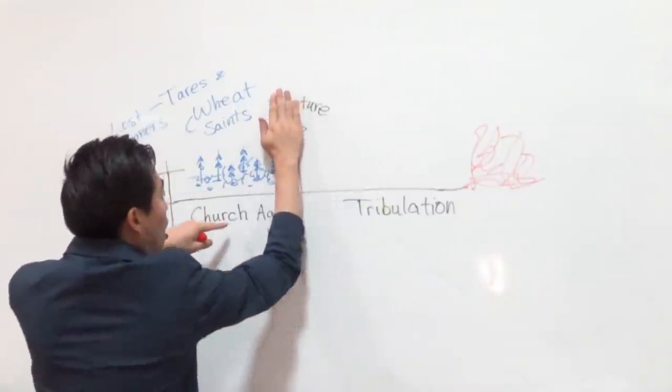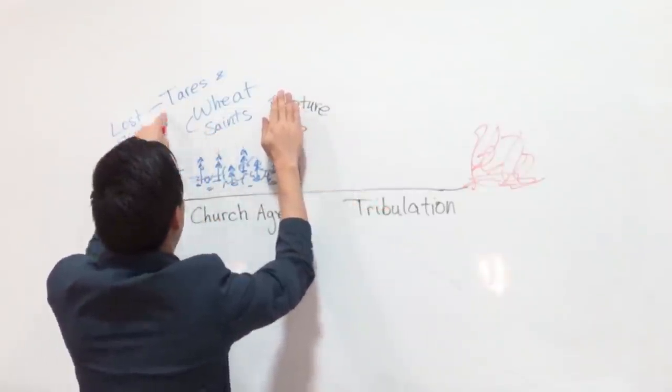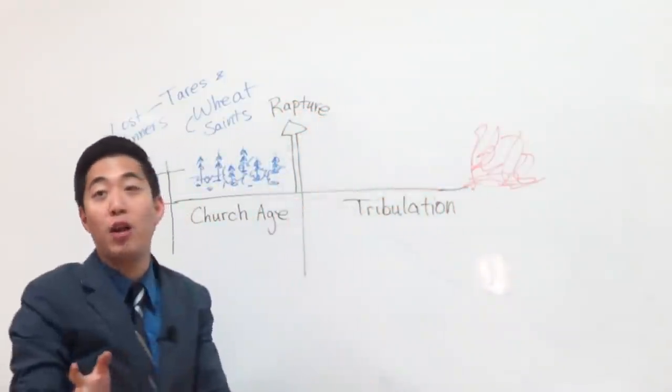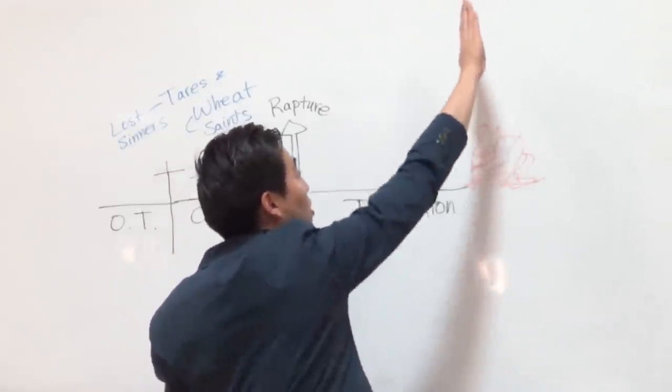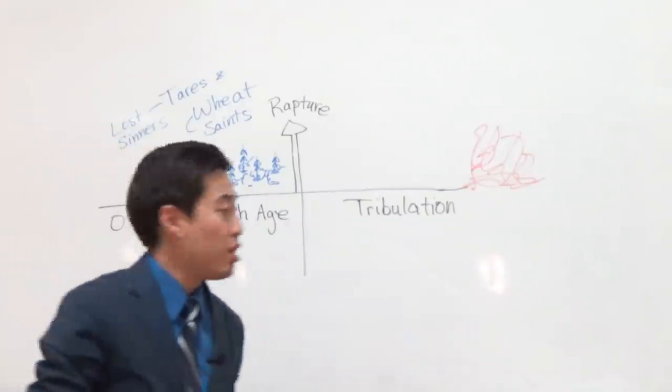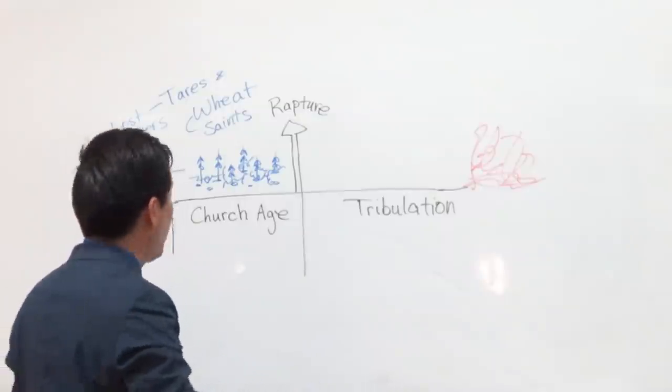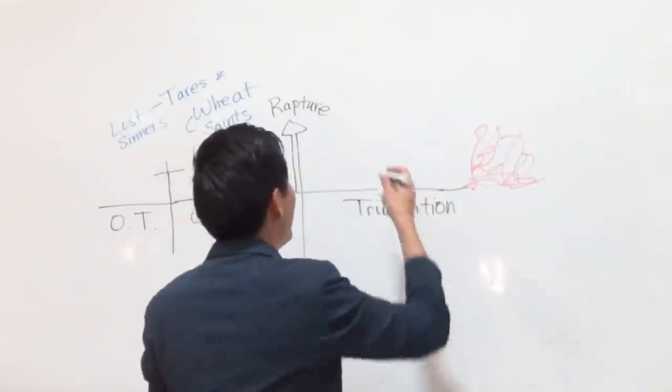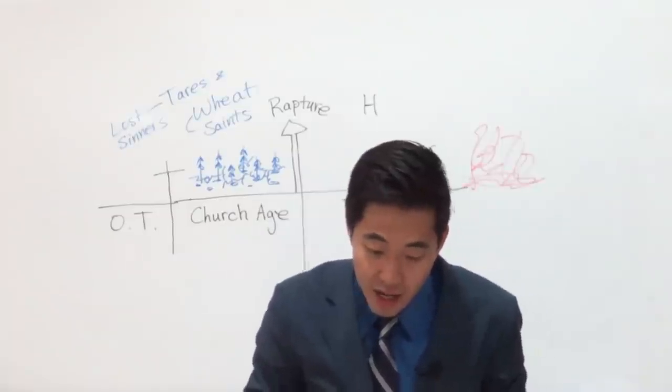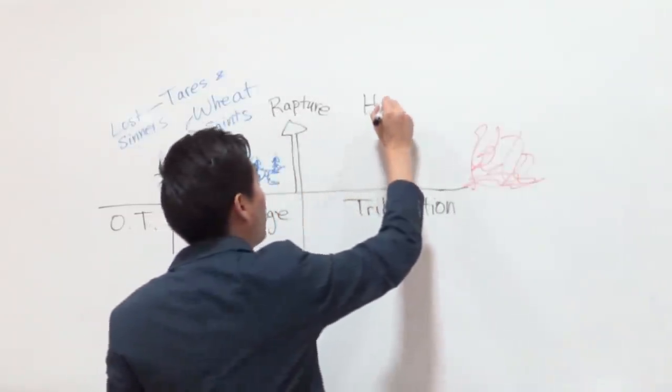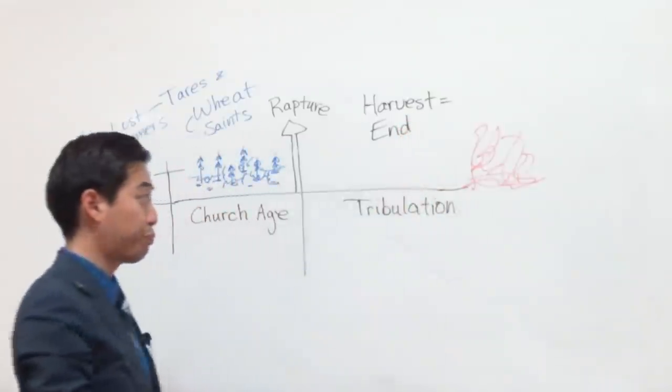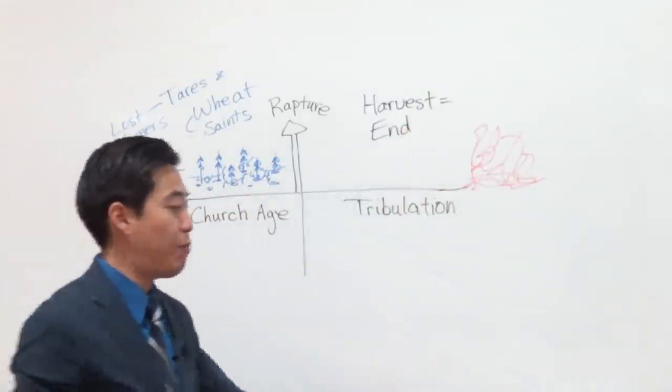If you get rid of this line right here, the church goes through the tribulation and there are wheats and tares, saints and lost sinners. And then at the final judgment, the lost sinners go to hell and then the saved people can be with God up in heaven reigning forever. That's where they get this idea. It says at the time of harvest as well. The time of harvest is the end of the world. Look at verse 39. The harvest is the end of the world. So it seems like the wheat and tares go through the tribulation together.